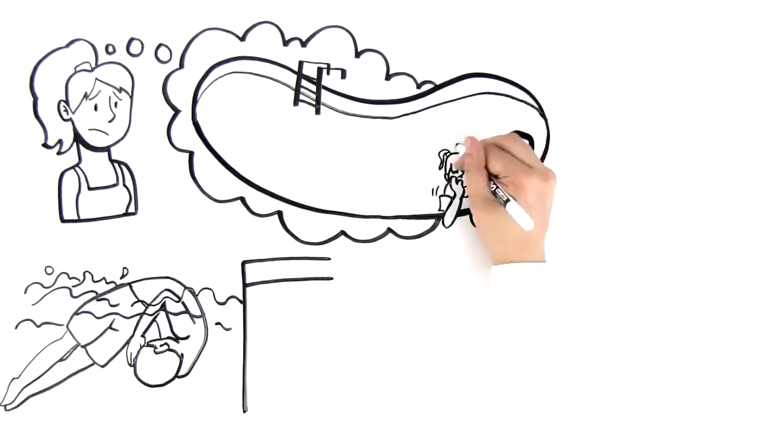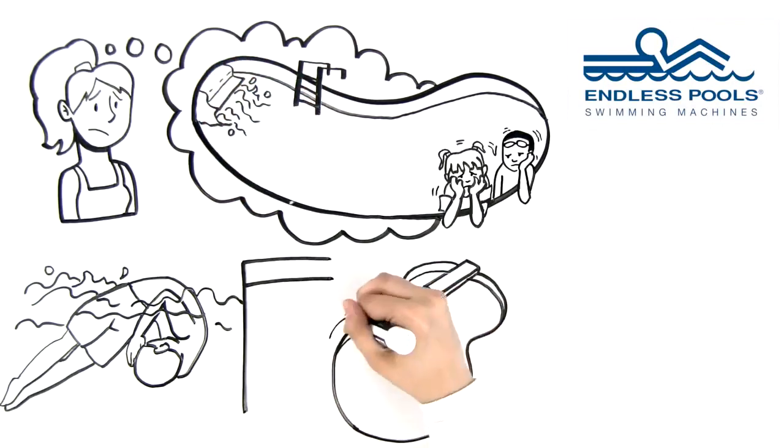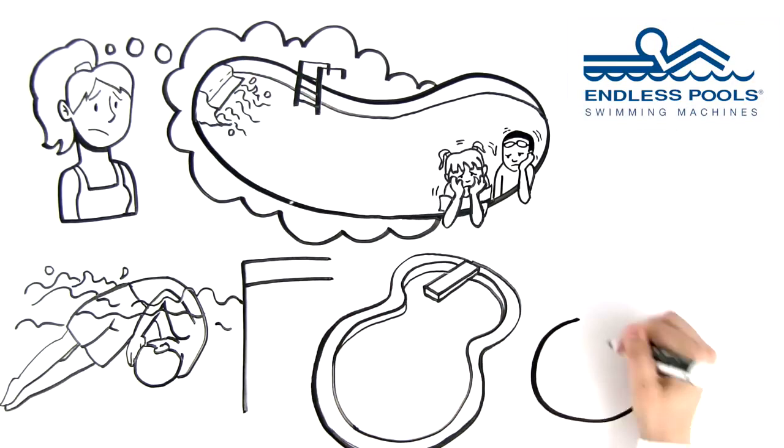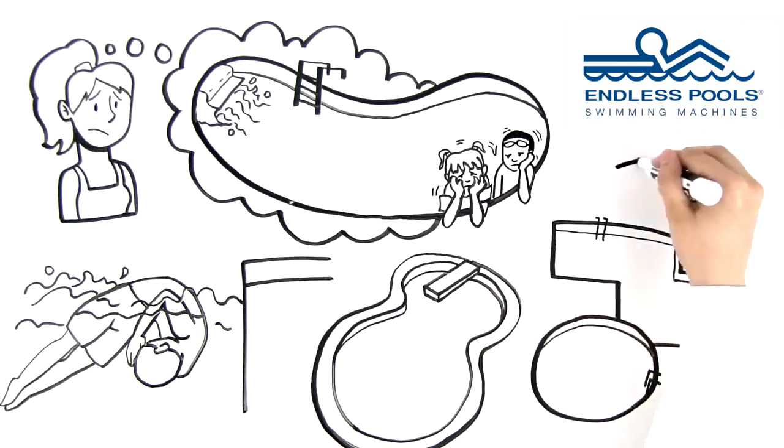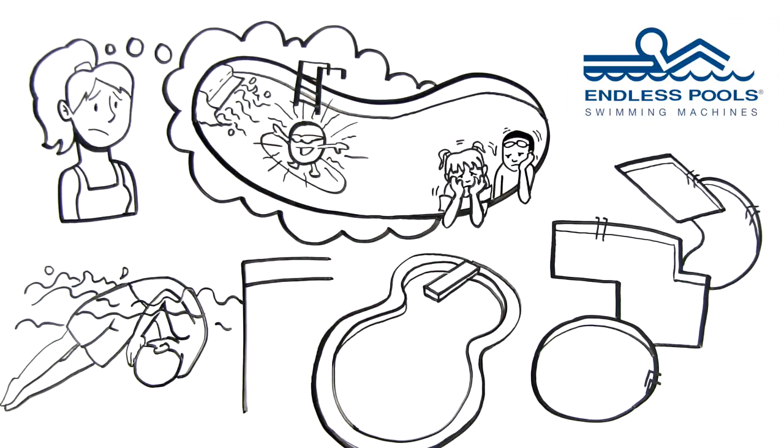That's why so many families turn to the Fastlane by Endless Pools. The Fastlane installs easily into pools of any size and any shape to provide a smooth, fully adjustable swim current, transforming your pool into an ocean of fun and fitness.